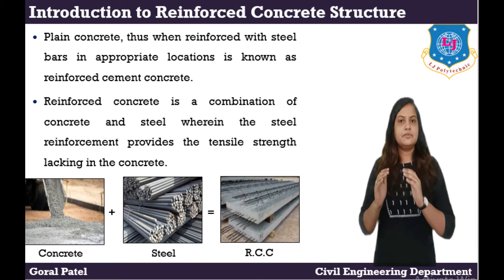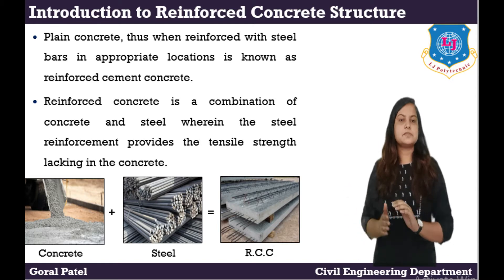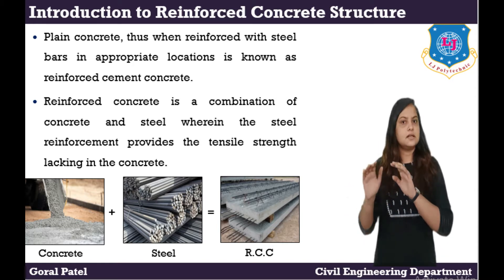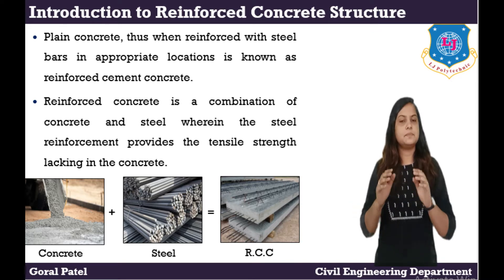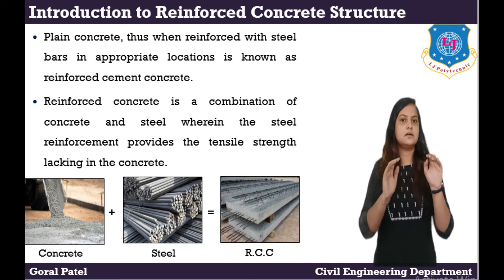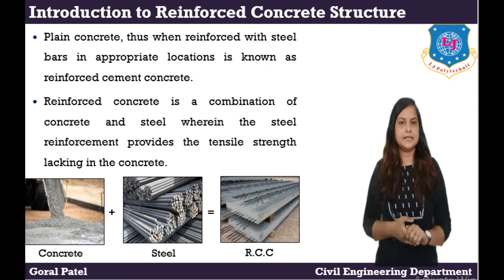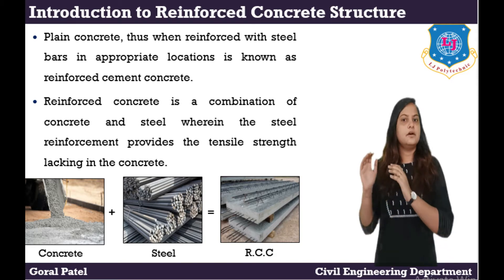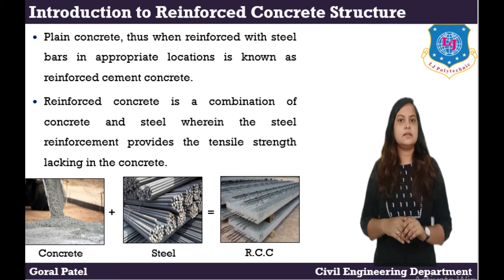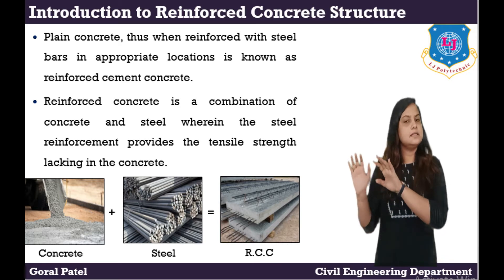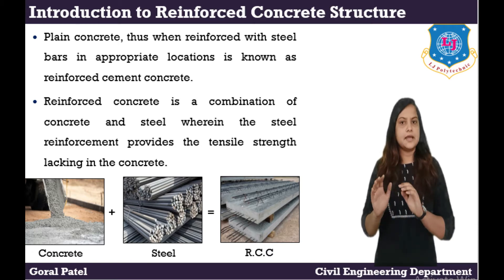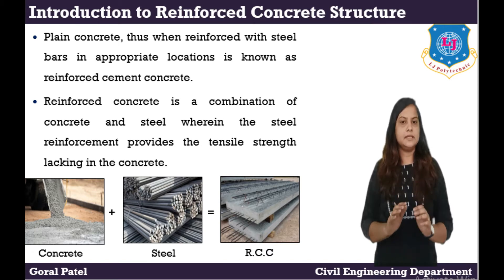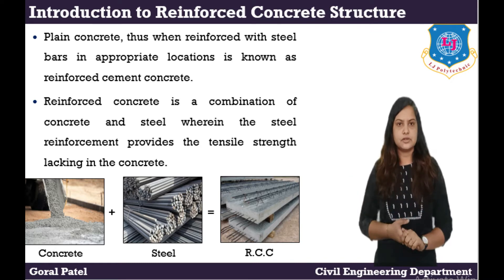We cannot randomly place the reinforcement as we like. There are certain rules listed by the Bureau of Indian Standards — a specific IS code which contains all the required information. We have to design the structure — whether superstructure or substructure — using the relevant IS code. For reinforced concrete construction, if steel or iron bars are used, then those structures are called RCC structures.